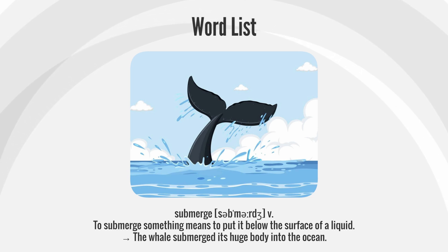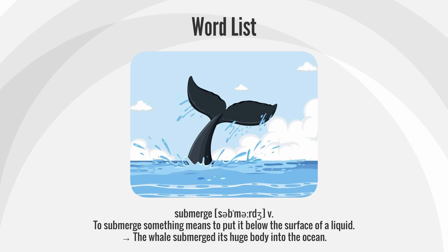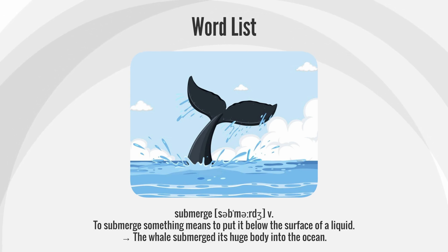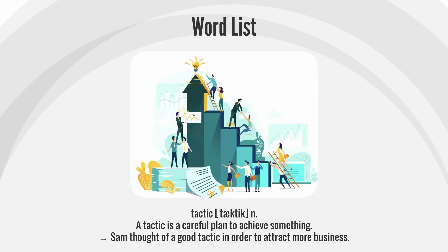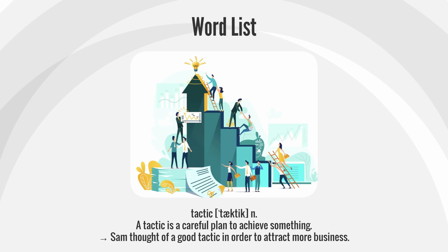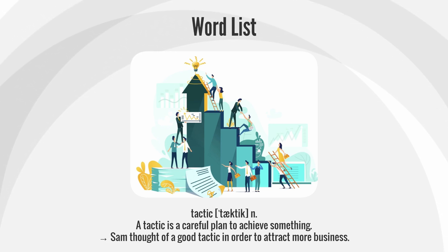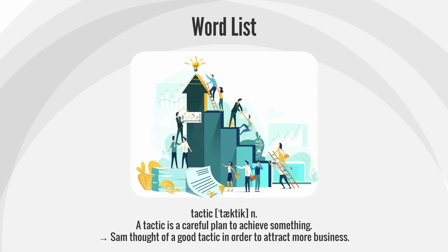Submerge — to submerge something means to put it below the surface of a liquid. The whale submerged its huge body into the ocean. Tactic — a tactic is a careful plan to achieve something. Sam thought of a good tactic in order to attract more business.